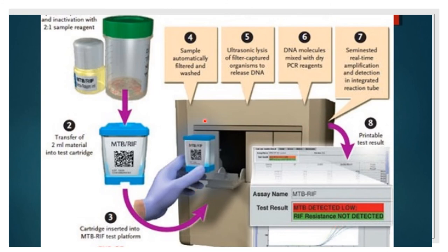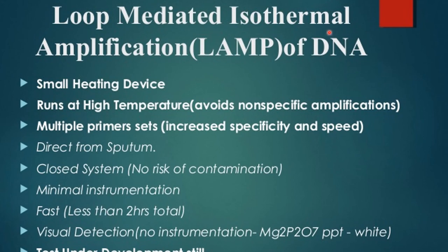The LAMP (loop-mediated isothermal amplification) technique uses a small heating device running at high temperature with multiple primer sets. It can be performed directly on sputum in a closed system with no risk of contamination, minimal instrumentation, and is a fast method. Visual detection of MTB is done via a precipitate formed during the reaction.